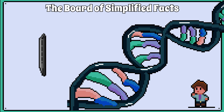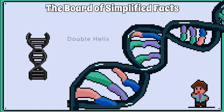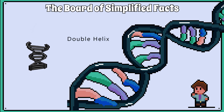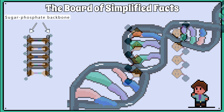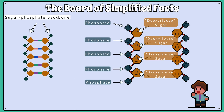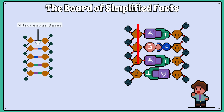DNA is structured like a ladder which has been twisted to form a shape called a double helix. The sides of the ladder are made of long chains of alternating sugar called deoxyribose and phosphate, and the rungs of the ladder are made of nitrogenous bases.